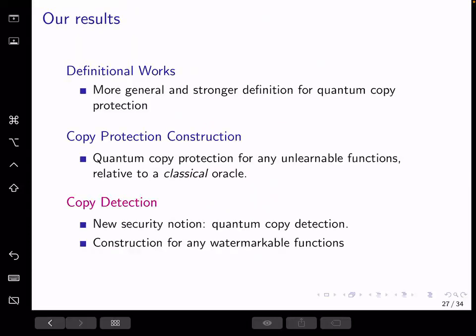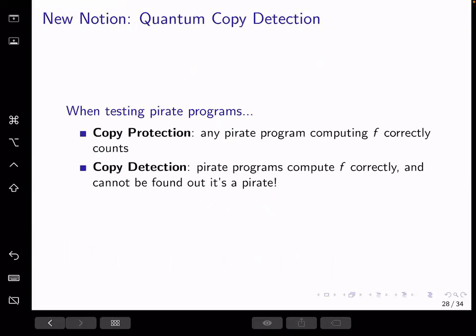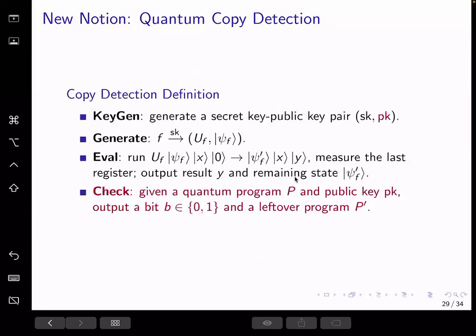And finally, comes to our third result. We also give a new security notion inspired by SSL. We put forward this notion called copy detection. Instead of allowing the adversary to win with any pirate programs that compute correctly, they also need to pass an additional test that tries to check if the programs are pirate copies, not authentic ones. So the adversary not only needs to produce programs that compute F, but also programs with certain features so that they won't be found out as pirates.